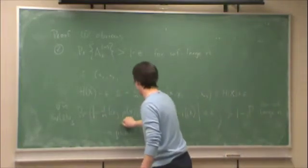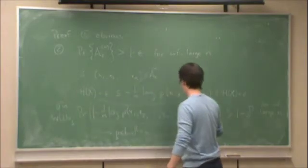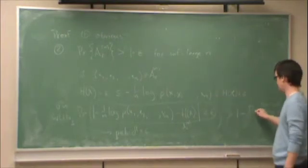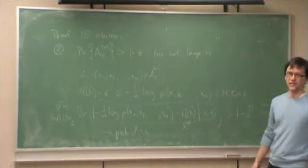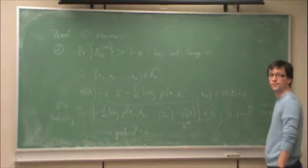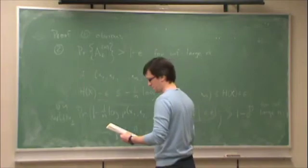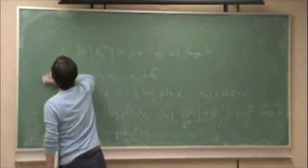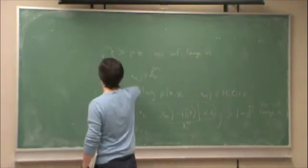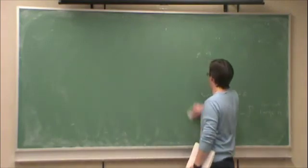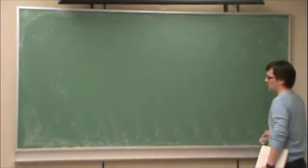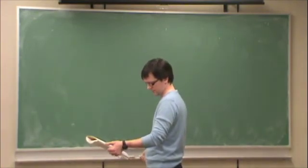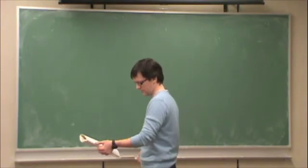So therefore, the probability, this part is equivalent to saying the probability of the Typical Set. And that must be greater than one minus delta, but we can pick any delta. So therefore, let's pick delta equals epsilon.